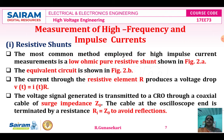The equation V(t) = I(t) × R is the time domain equation. The voltage signal generated is transmitted to the CRO through a coaxial cable of surge impedance Z₀. The cable at the CRO end is terminated by resistance r_i equal to Z₀ to avoid reflections.